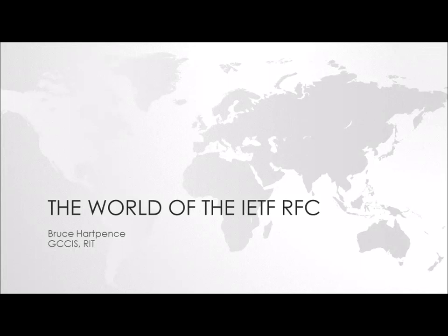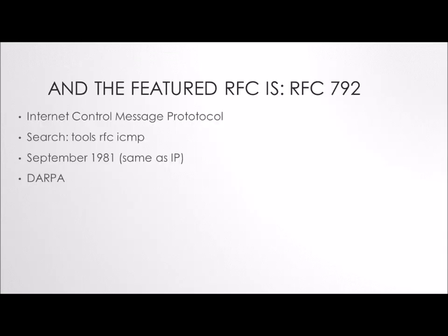Welcome back to another episode of the wonderful world of the IETF RFC. The featured RFC this time is RFC 792, which is the Internet Control Message Protocol. You may note when you see the front of it that it actually dates from the same time as RFC 791, which was our last featured RFC, which sort of indicates they kind of go together — and they do, which is one of the reasons I picked it for this week.